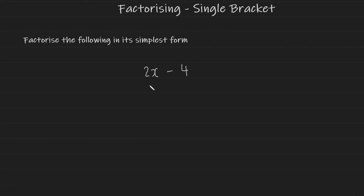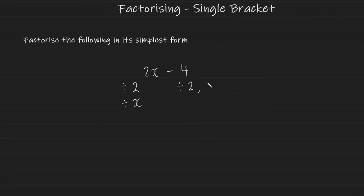Take the leftmost term and take the number part of it and ask yourself: what can I divide 2 by to get a whole number? I can divide 2 by 2 to get 1, so 2 is divisible by 2. For x, I can only divide it by x. For 4, I can divide it by 2 or by 4 itself, and there are no variables next to 4. For simple problems you don't always have to show your working out this way — you can get full marks for just factorizing straight away.